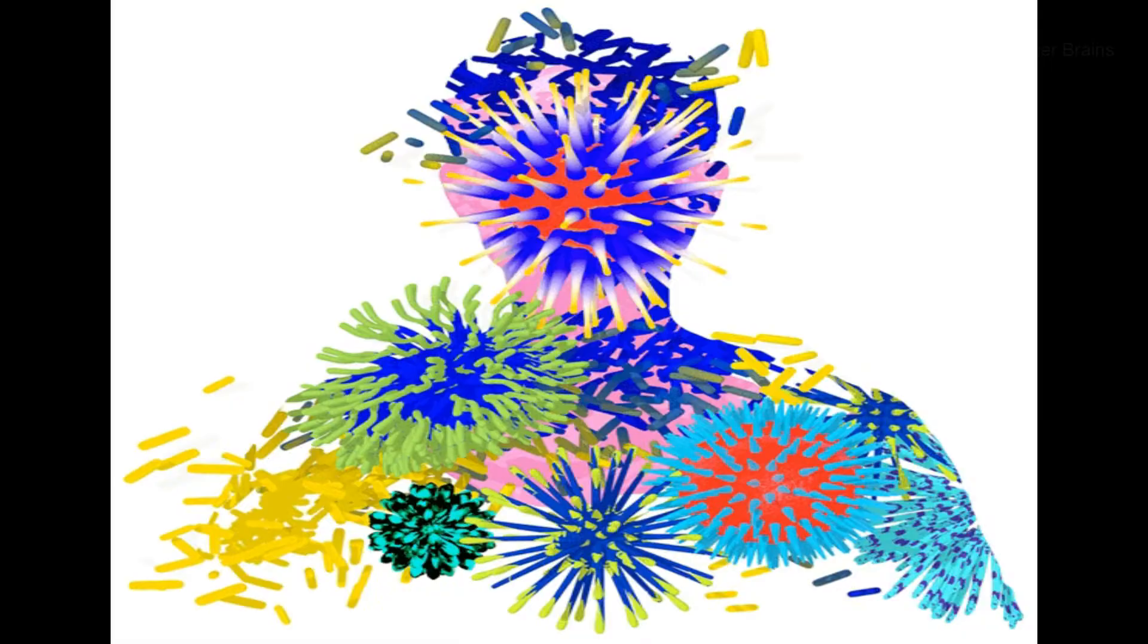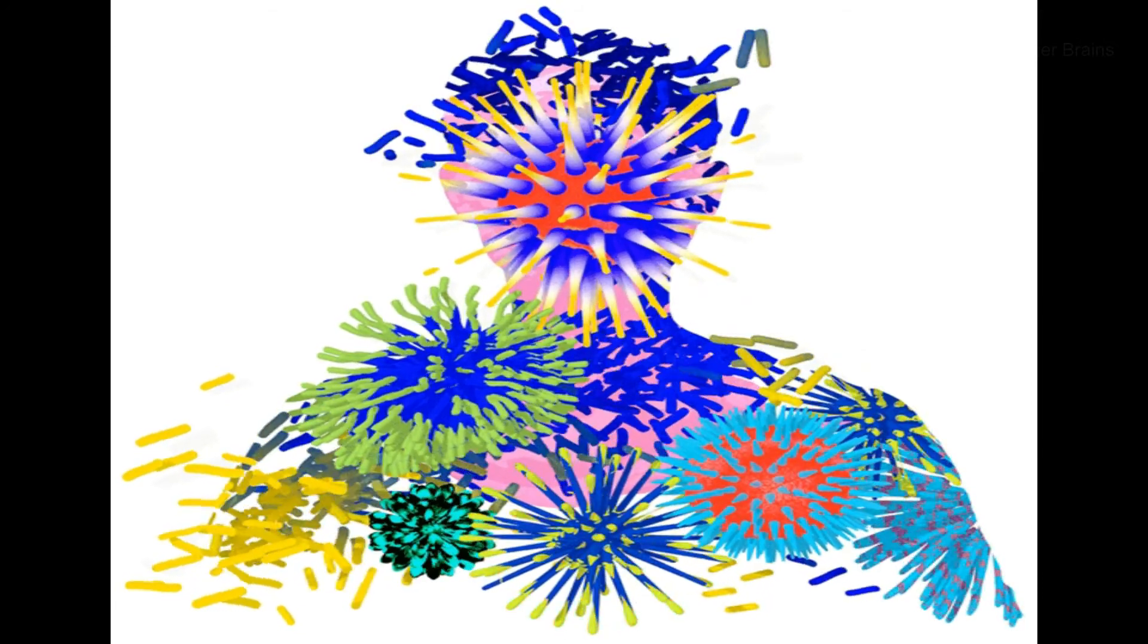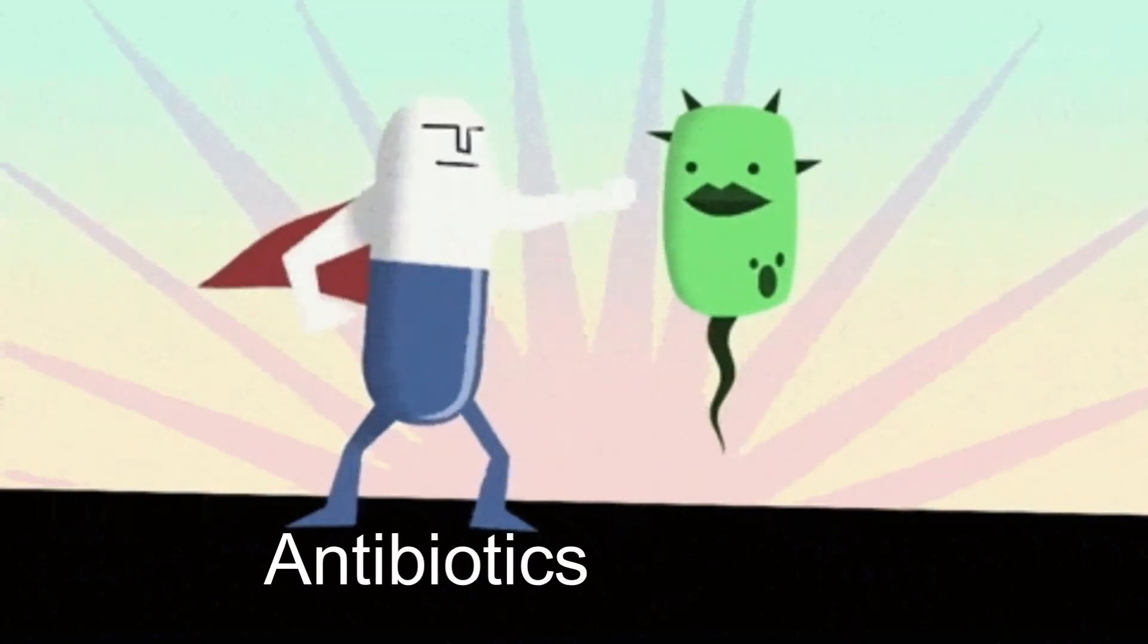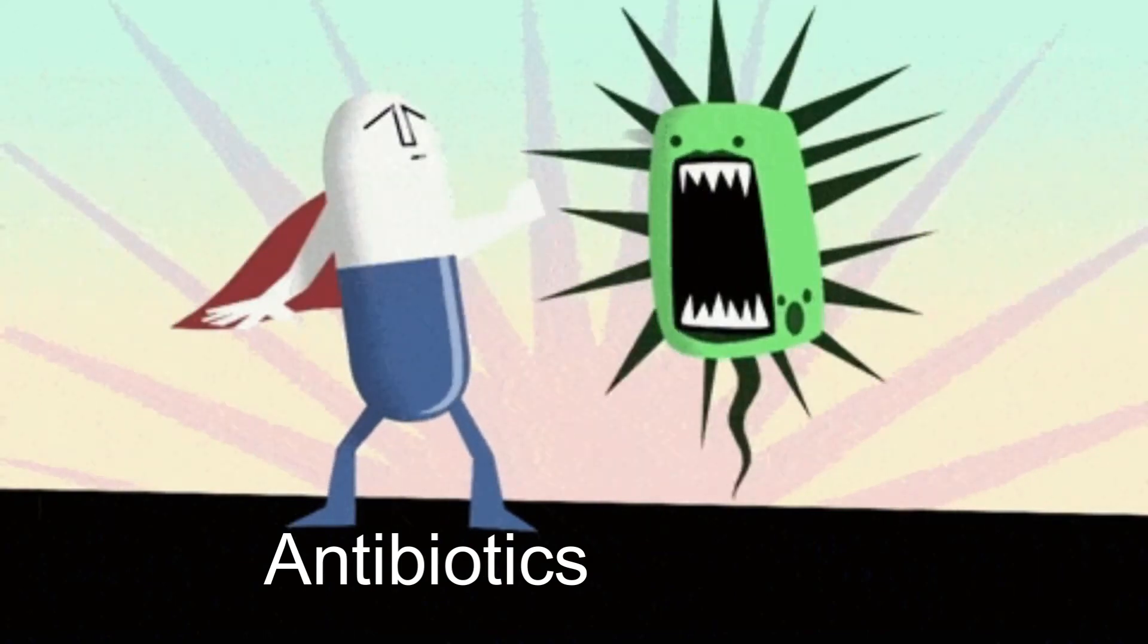The immune system needs some kind of immunity to fight back, so we need antiviral medicine or a vaccine. Antibiotics don't work against viruses; they work against bacteria. For long-term immunity, we need a vaccine.